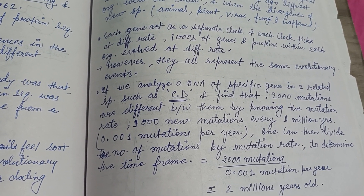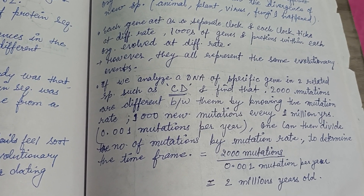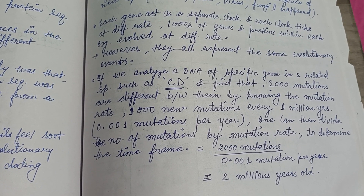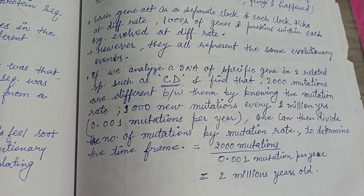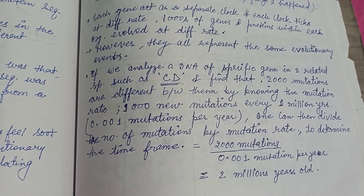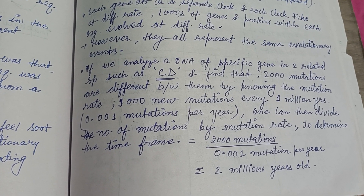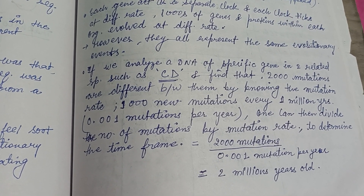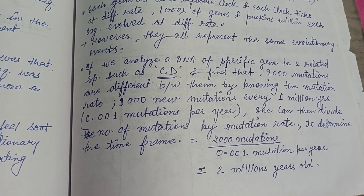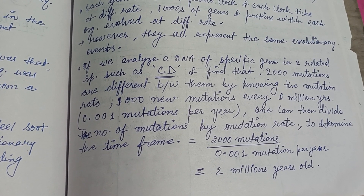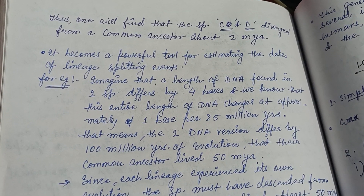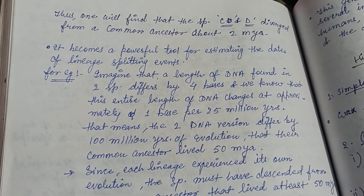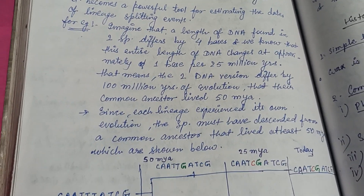For example, consider two organisms C and D, which have a specific DNA sequence. We find that 2000 mutations differ between them. Knowing the mutation rate is 1000 new mutations every 1 million years — that is 0.001 mutations per year — one can divide the number of mutations by the mutation rate to determine the time frame: 2000 ÷ 0.001 = 2 million years. So C and D diverged from a common ancestor about 2 million years ago.